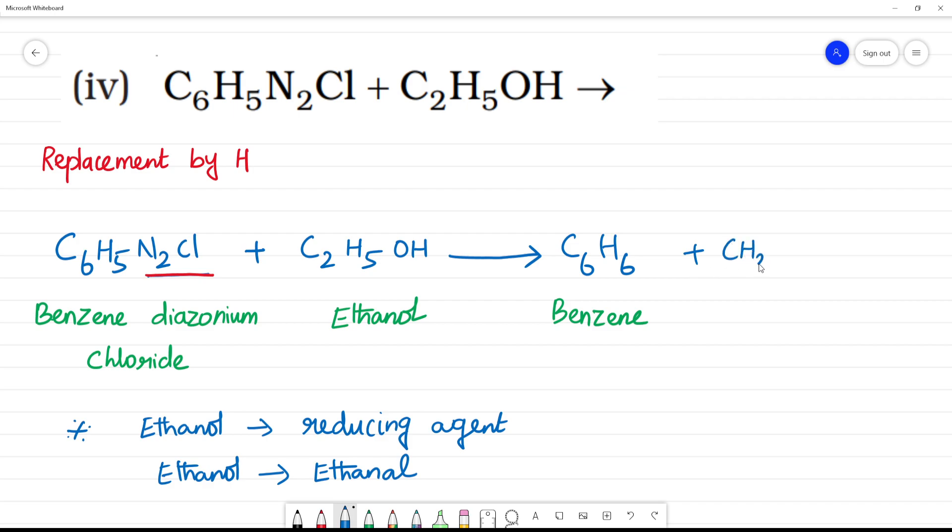That is, we will be getting CH3CHO, ethanal. N2Cl, so N2Cl, N2 will be leaving plus we will be getting another HCl.